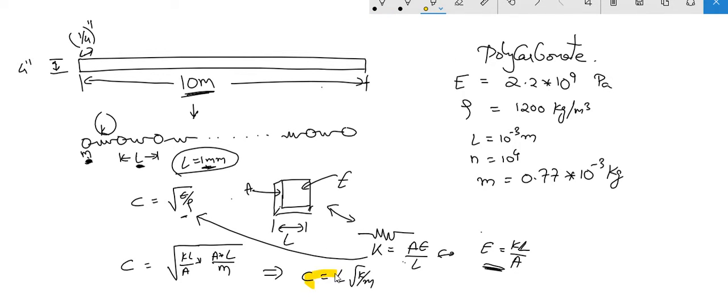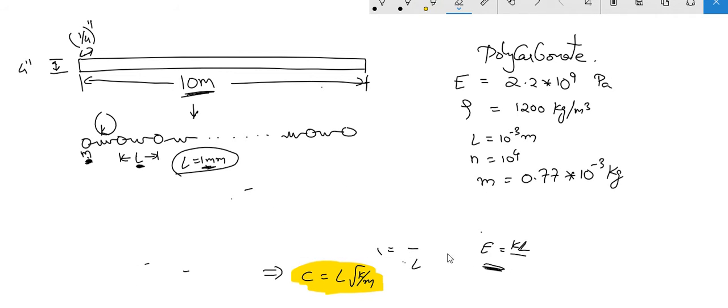So let's highlight that. Now we know how we got there. So I'm gonna save that off. Because c is l root k over m, and because c is under root E over rho, for the beam which is made of polycarbonate where E and rho are known, this is approximately 1350 meters per second.